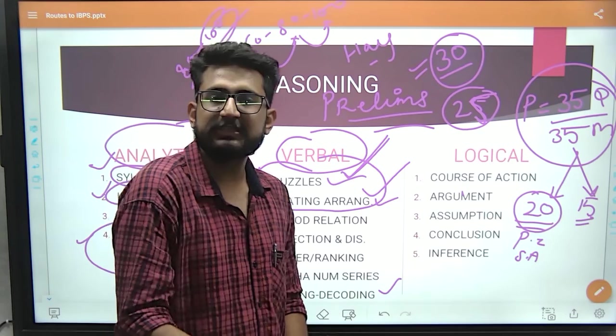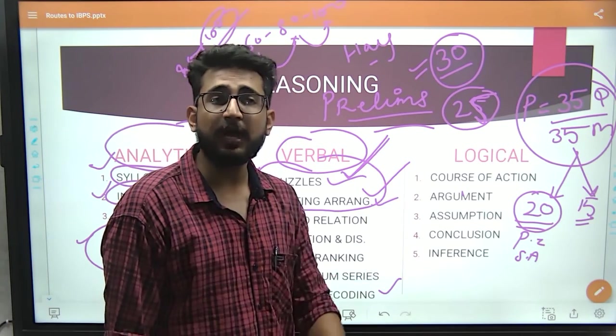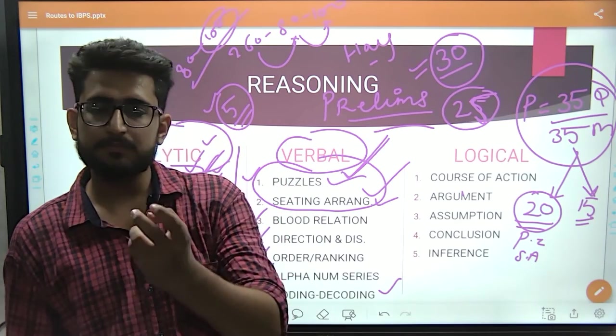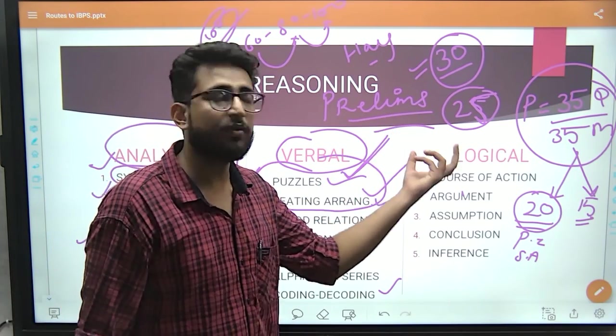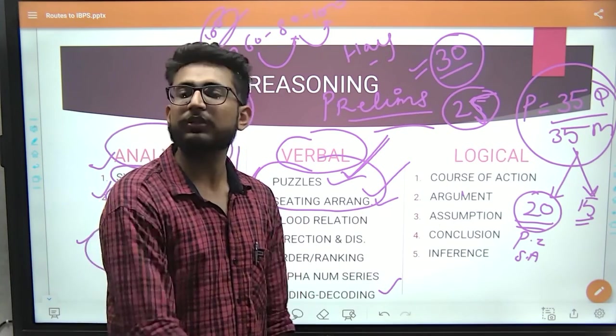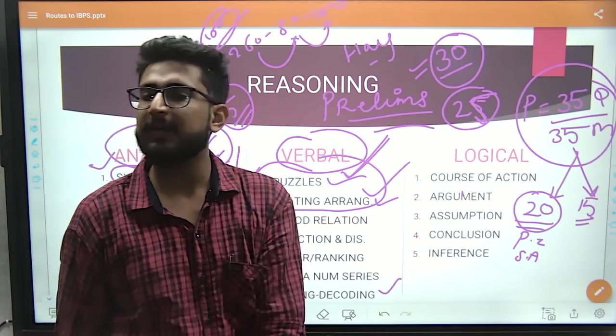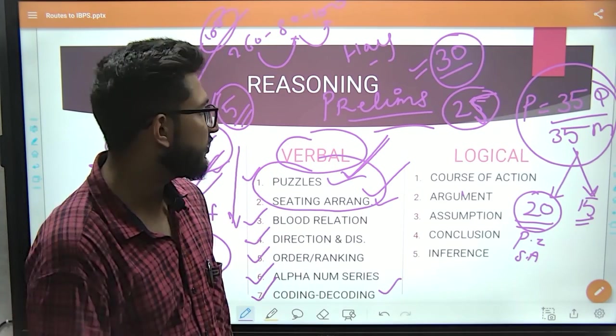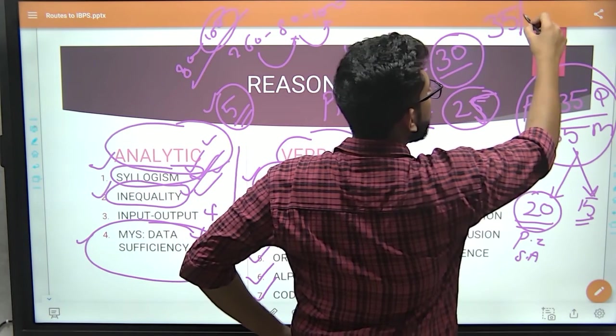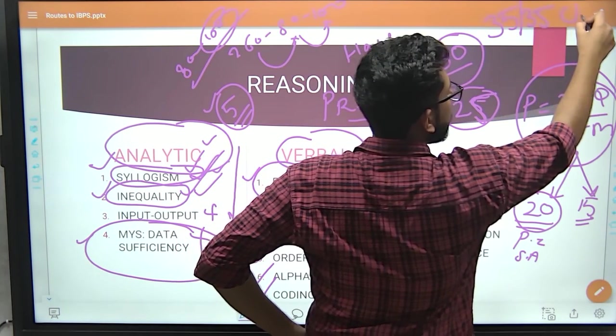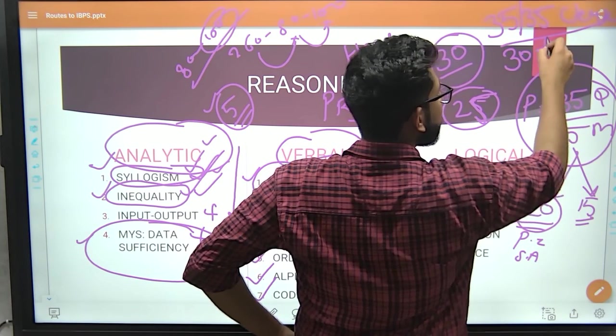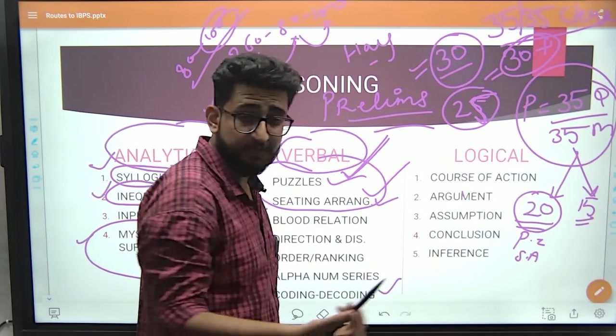With the practice, you are writing every mock, you analyze it. After analyzing, see why you couldn't score, why you couldn't reach 30, why you couldn't reach 35, and then work on that. After every mock, work on yourself, work on every topic. And trust me, you can easily score 35 out of 35 in clerk. And if we talk about PO, then in PO 30 plus can be done, and even 35 can be scored.